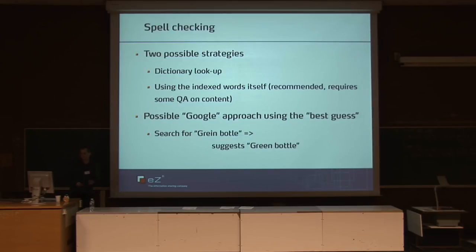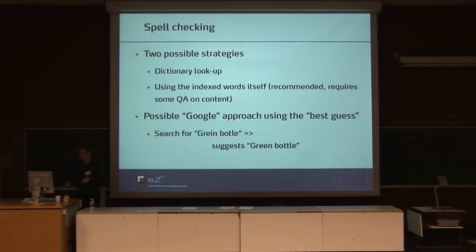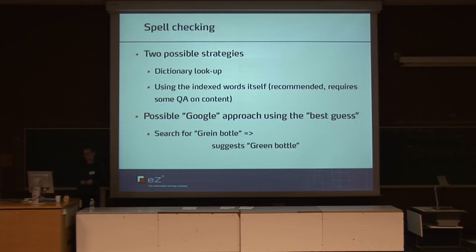Spell checking is provided in two different strategies. You could provide a dictionary yourself with all kinds of terms, or you can use the indexed terms inside the search index. The second approach is recommended because if you have a site with proper names or expressions that are not common, you won't find them in a normal dictionary. But since they are part of the content, the spell check becomes much more relevant and complete. It is also possible to ask for a Google-style best-guess approach, so for example if you search for 'green bottle', it will try to output an alternative phrase entirely. There are many more possibilities — it's actually endless with Solr.